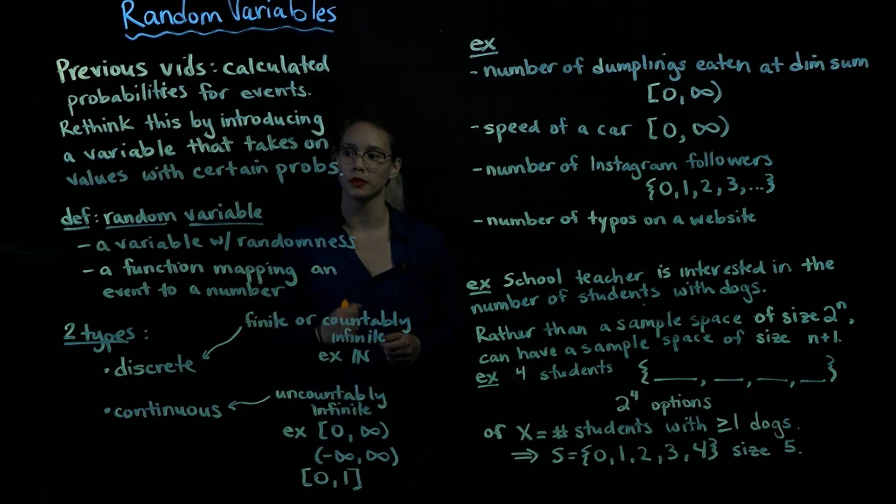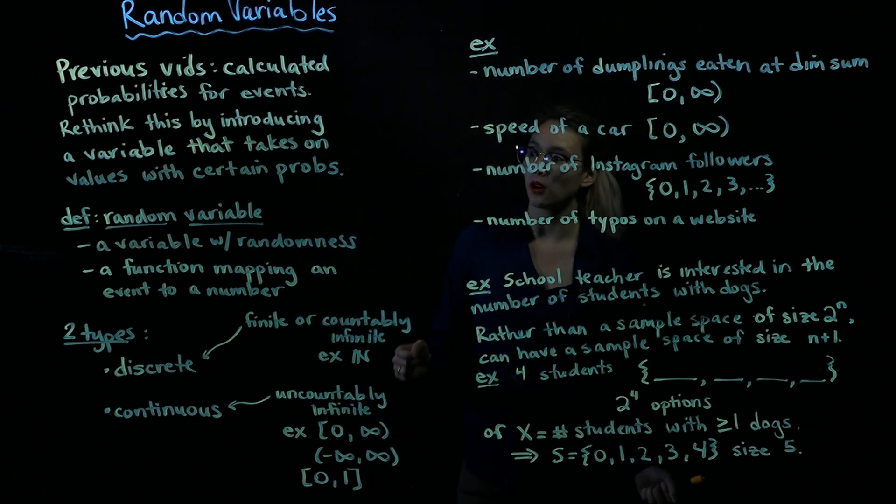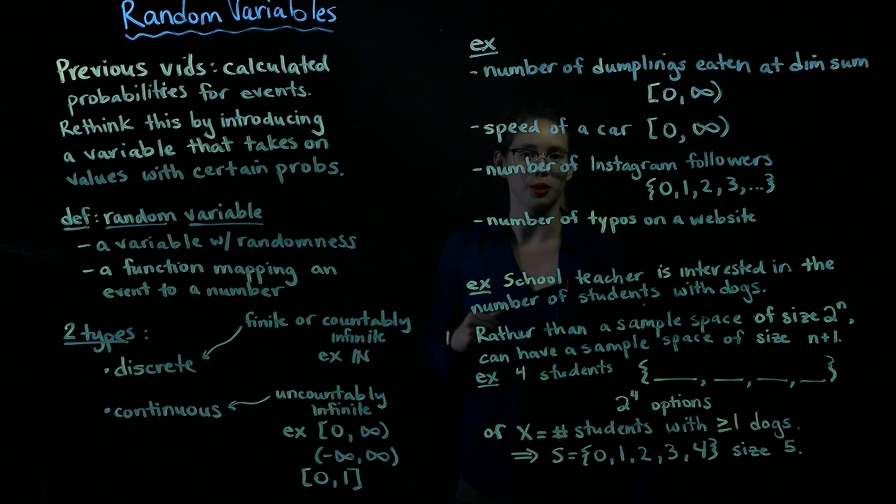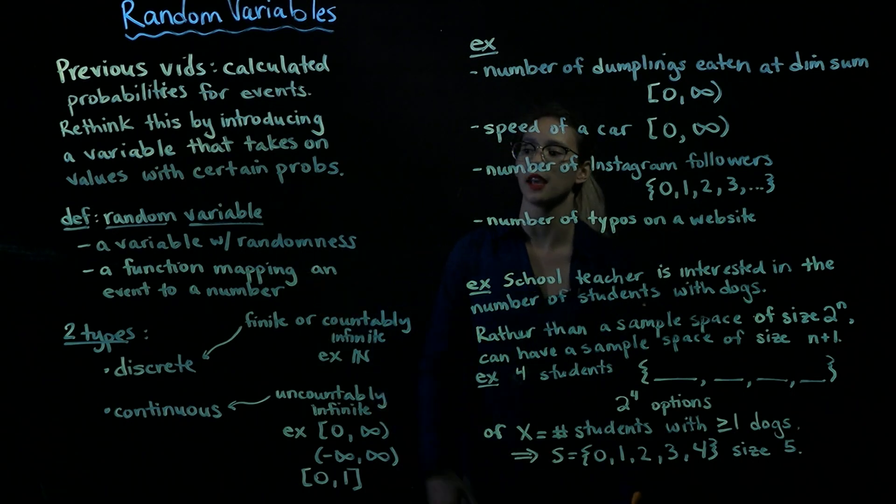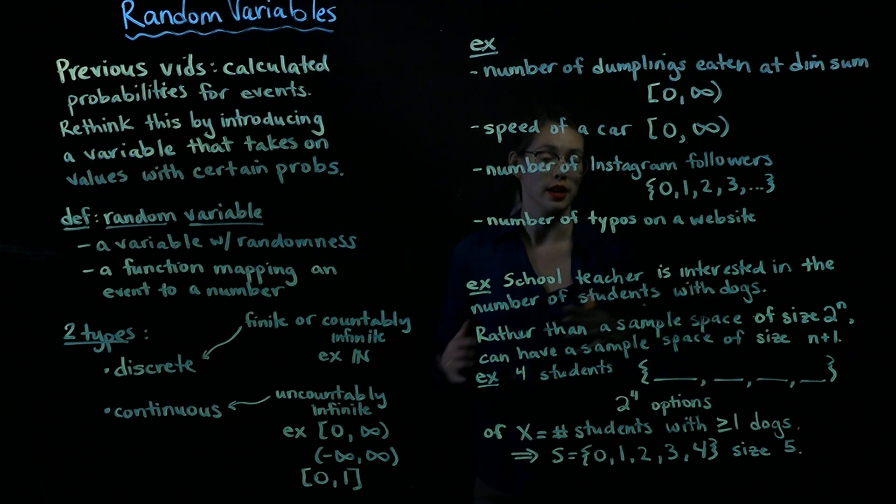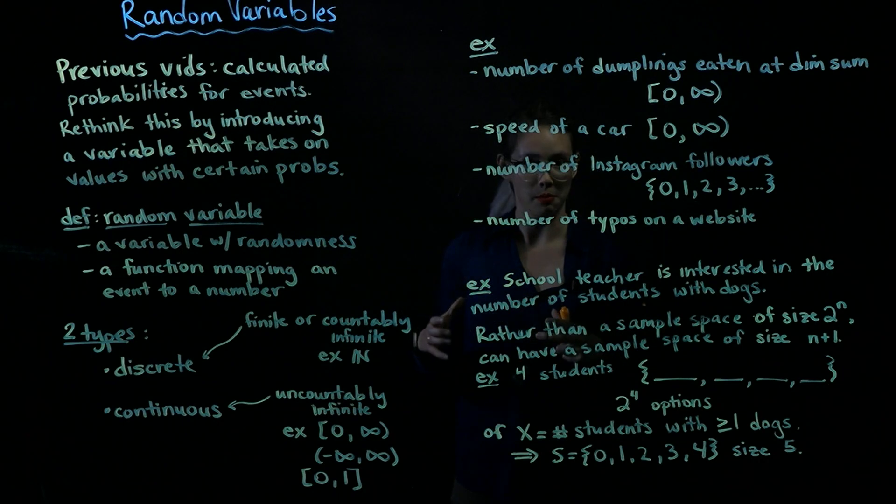So this is a random variable. You can just think about a random variable as a variable with randomness. Probability is associated there. Or if you have maybe more of a mappy mind, you can think about this as a function mapping an event to a number. So it might be mapping it to the natural numbers or the interval 0, 1. It's just mapping it to some number.